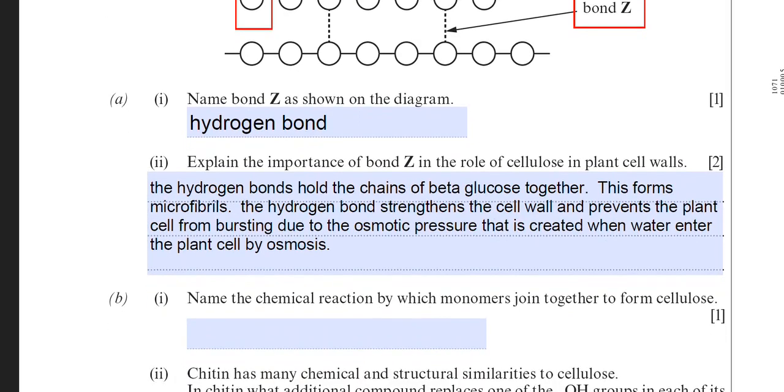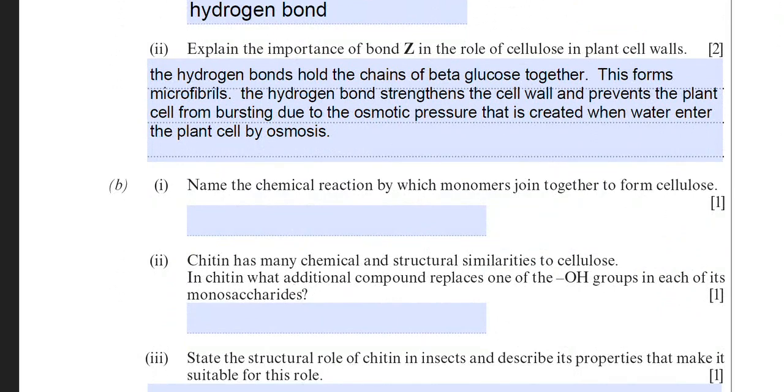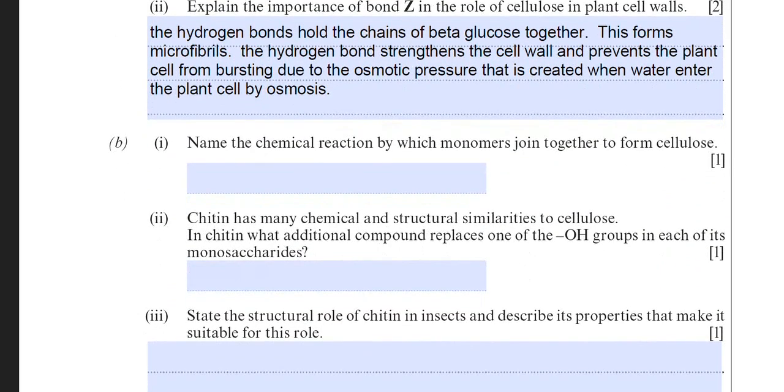If we move on to part B, it's asking you to name the chemical reaction by which monomers join together to form cellulose. The answer to that of course is... sorry, it's called the condensation reaction. After that condensation reaction has occurred you get a glycosidic bond forming between the monomers of cellulose, which as I said earlier is known as beta-glucose. So the answer to part B1 is condensation reaction.